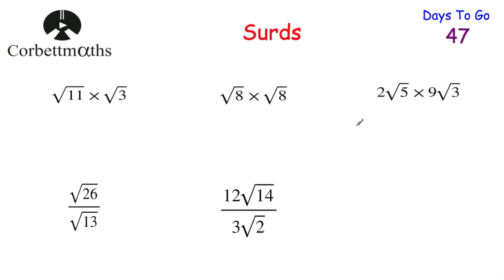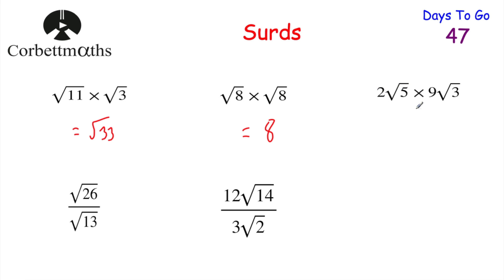Let's have a look at some questions for you to try. Feel free to press pause and work out each of these. Root 11 times root 3 would be root 33 — just multiplying the numbers together. Root 8 times root 8: remember, root A times root A is just A, so that'd just be equal to 8. Next, 2 root 5 multiplied by 9 root 3: 2 times 9 is 18, and root 5 times root 3 gives root 15, so the answer is 18 root 15.